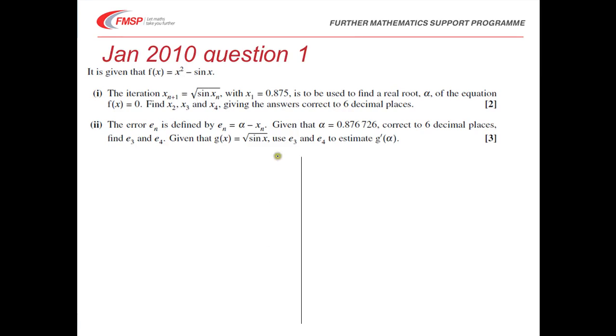In the question, we're told that we have a function f of x, which is x squared minus sin x. In part 1 we're asked to use the iteration x_{n+1} is equal to the square root of sin x_n, with x_1 equals 0.875, and it's to be used to find the real root alpha of the equation f(x) equals 0.